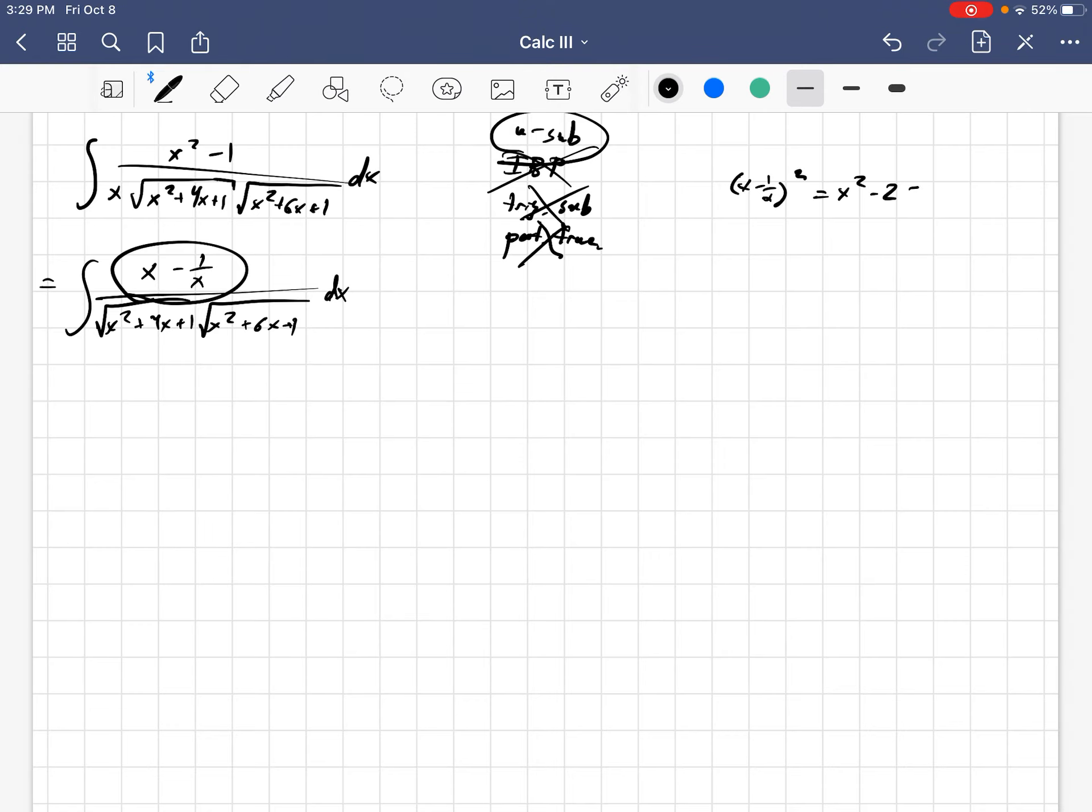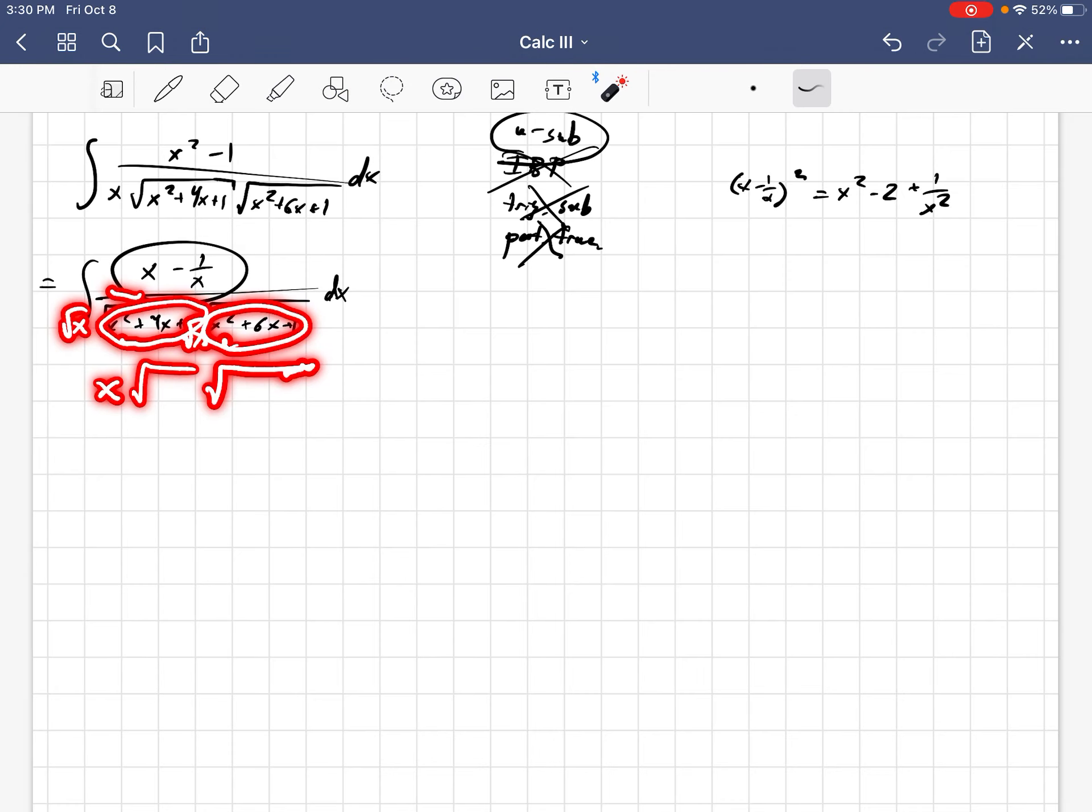When I square it, I get x squared minus 2 plus 1 over x squared, which is good. That is just a nice fact that the x squared and the 1 over x squared cancel out. And then also, if I were to take out a factor of x inside of each of these square roots, then that would become a square root x on the outside and a square root x on the outside, which would multiply to become an x times these two new square roots.